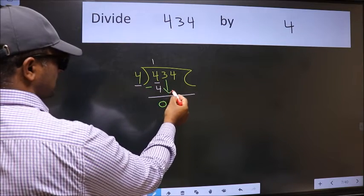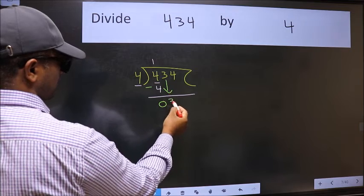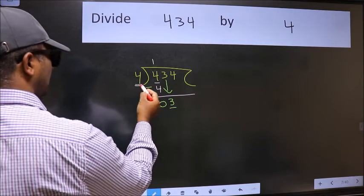After this, bring down the beside number. So 3 down. Now here we have 3 and here 4.